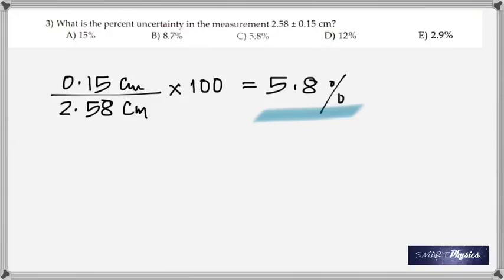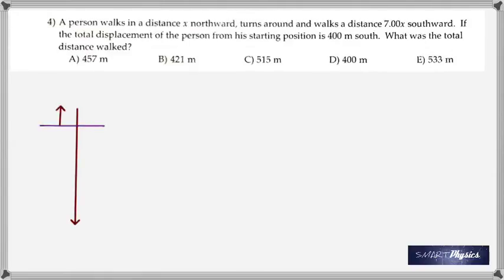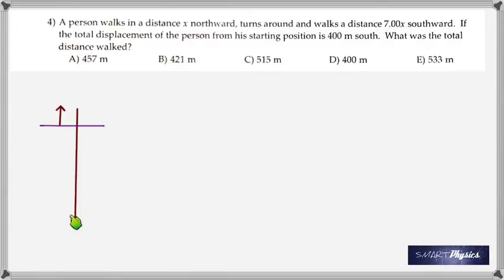A person walks a distance x northwards, then walks a distance 7x to the south. If the total displacement is 400 meters south — remember displacement is from starting point to finishing point — if this is x and that is 7x, then the net is 6x. So 6x is given as 400.